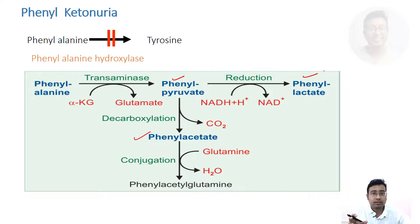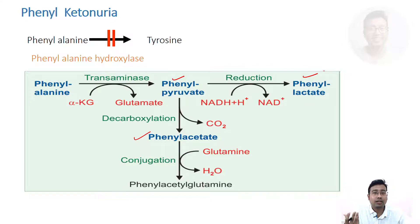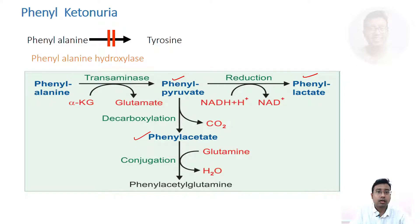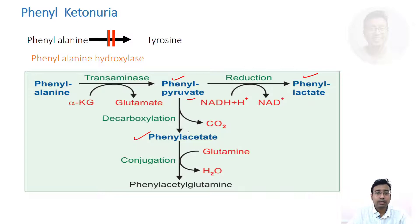If the examiner asks what are the byproducts of phenylketonuria — the products accumulated and excreted in urine — those are phenylpyruvate, phenylacetate, and phenyllactate. You should remember these three names.